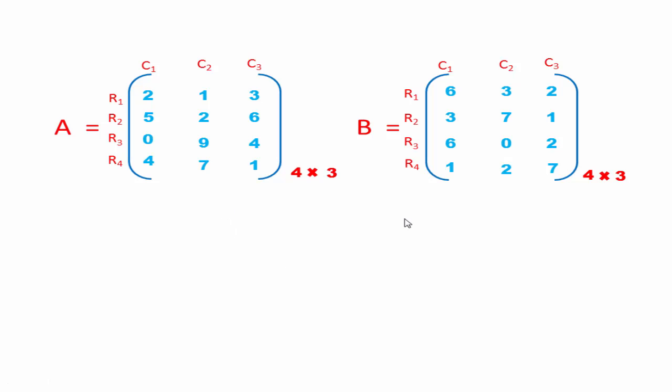As you can see here, Matrix A and Matrix B each has four rows and three columns. So the addition of these two matrices will be possible. Let's see how to do it.